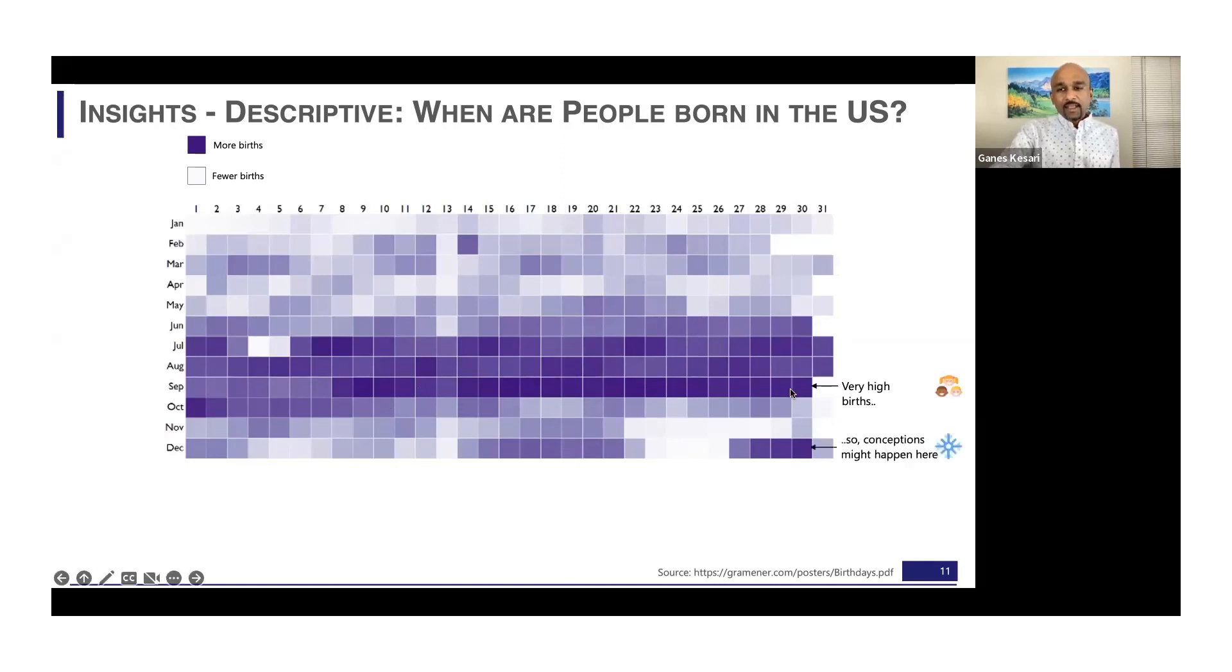So you can conclude that conceptions might happen here during the holiday season, but there are a few other patterns which also stand out. For instance, very few births in these two patches. This happens to be the Thanksgiving holidays and the Christmas holidays.